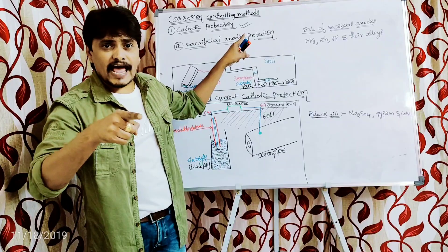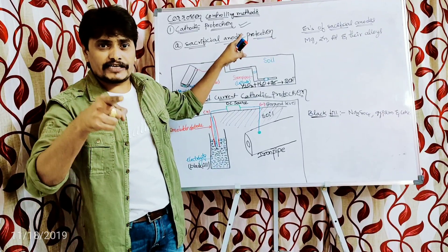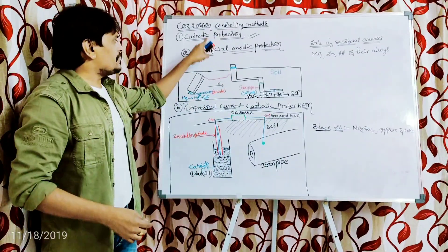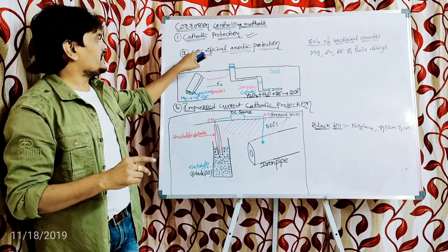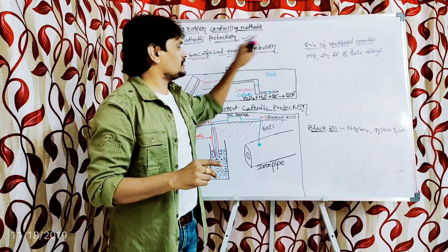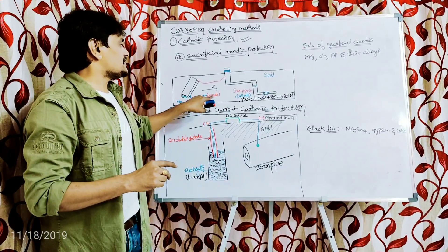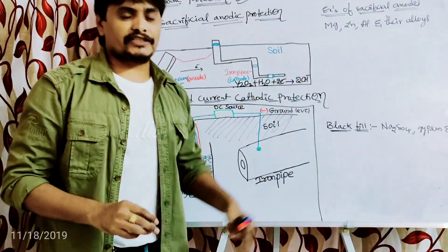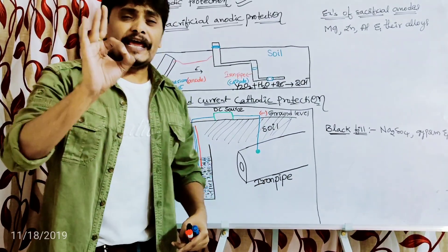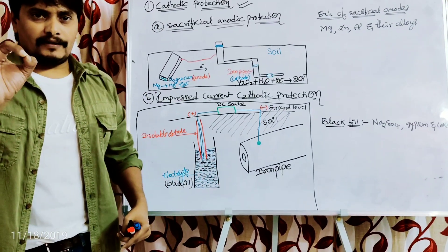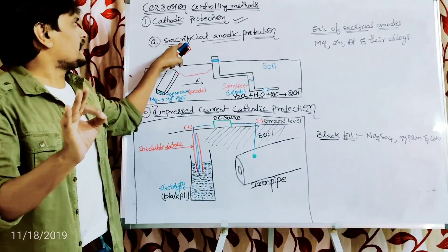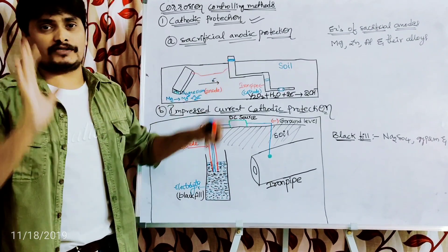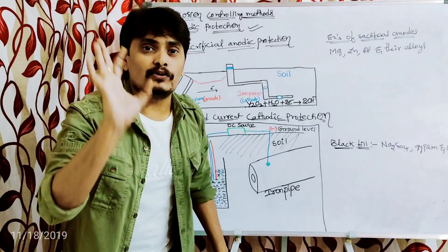The base metal is forced to act as a cathode instead of an anode. Cathodic protection can be done by two ways: the first is sacrificial anode protection, and the second is impressed current cathodic protection. The name 'sacrificial anode protection' itself suggests that we are going to use sacrificial anodes in this method.